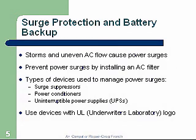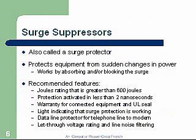Surge suppressors, also called surge protectors, look like power strips and protect equipment from sudden changes in power by absorbing or blocking the surge. Recommended features: a joules rating generally greater than 600 joules; protection activated in less than 2 nanoseconds; a warranty for connected equipment; the UL seal; and indicator lights showing surge protection is active. Also include data line protectors for telephone and modems, which help during storms when lightning can put surges on the lines. Look for let-through voltage rating and line noise filtering.